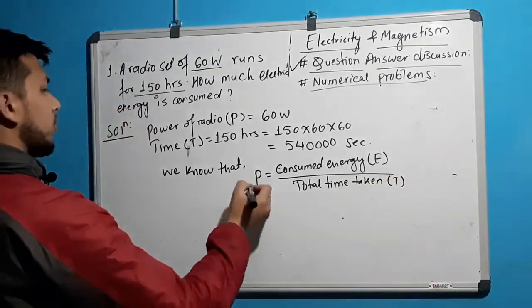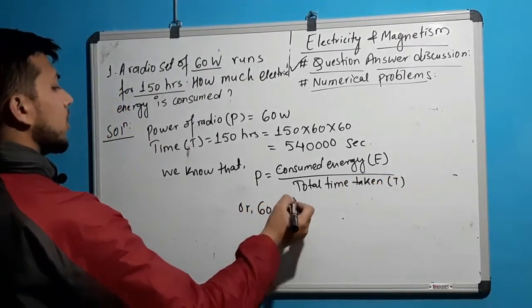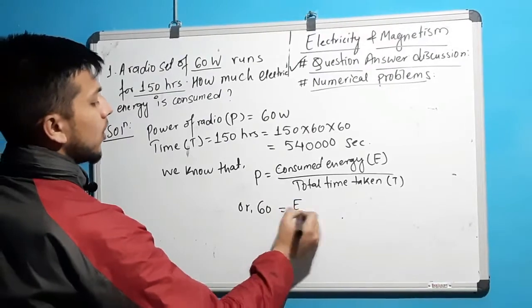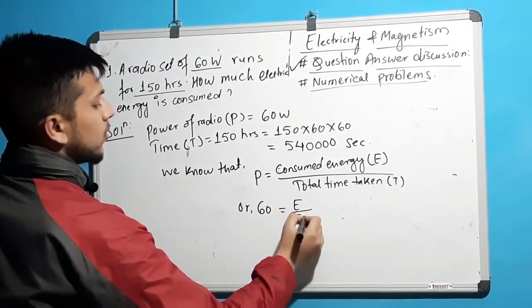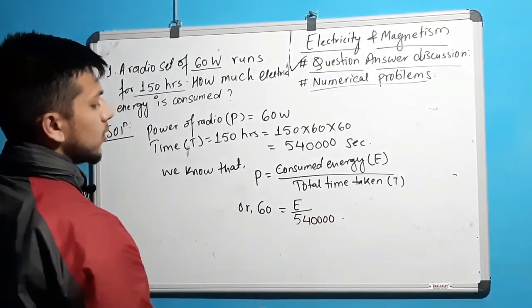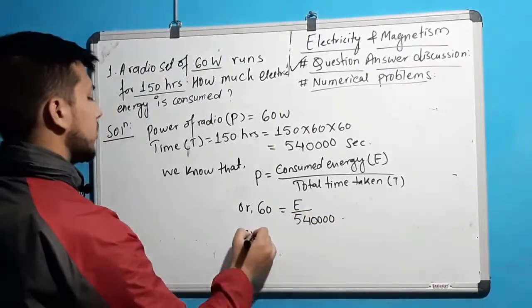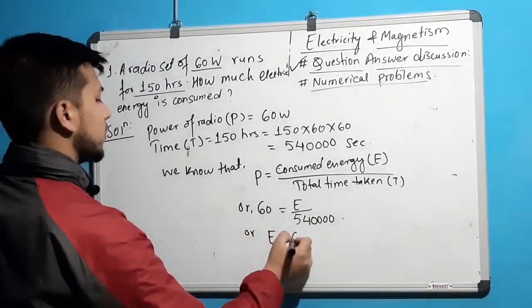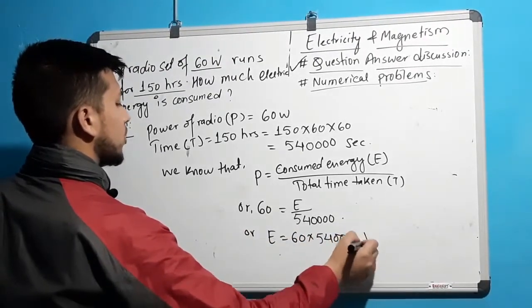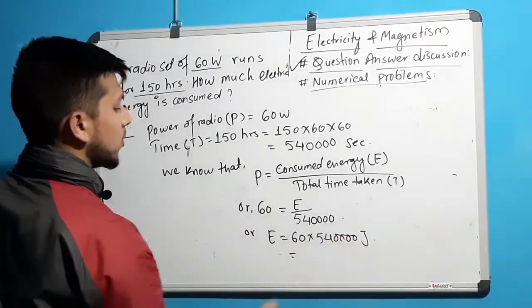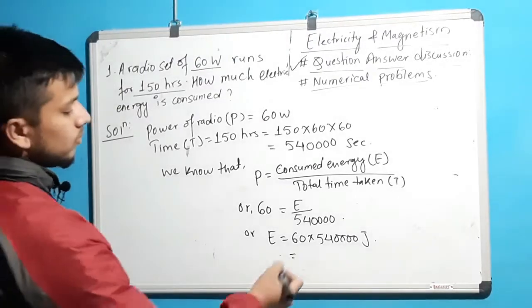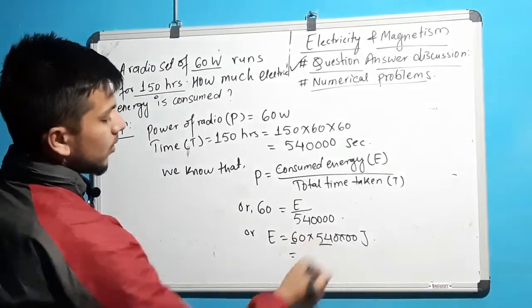P equals 60W, so energy E equals P multiplied by T. That is E equals 60 into 540,000 seconds. E equals 6 into 540,000 Joules.